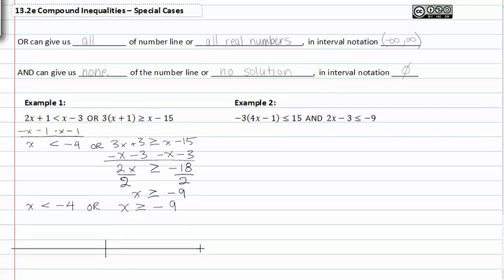In this situation, we'll say that negative nine is right here and negative four is about right here. If x is less than negative four, it's an open dot to the left, and if x is greater than or equal to negative nine, that would be a closed dot to the right.